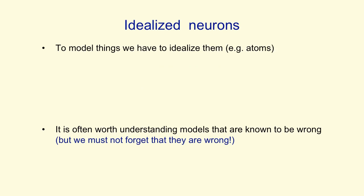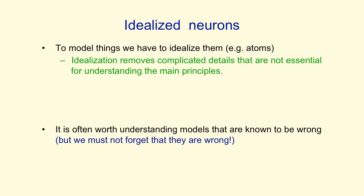In order to understand anything complicated, we have to idealize it. That is, we have to make simplifications that allow us to get a handle on how it might work. With atoms, for example, we simplify them as behaving like little solar systems. Idealization removes the complicated details that are not essential for understanding the main principles.